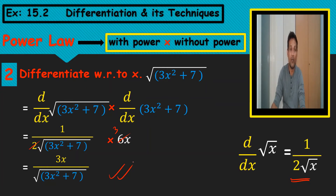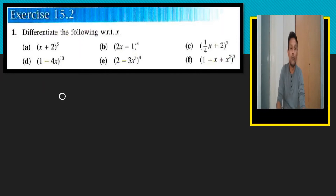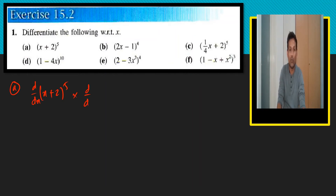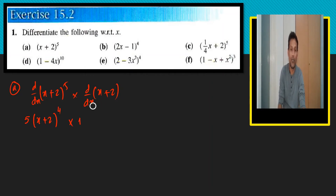Power law in 15.2 is very simple. In examples I will write only one multiply by d/dx. For (x plus 2) to the power 5: 5 becomes the coefficient, I copy the whole bracket, power becomes 4, and the differentiation of x plus 2 is just 1 plus 0. So 5 times 1 gives the final answer 5(x plus 2) to the power 4.